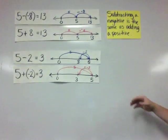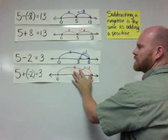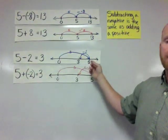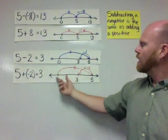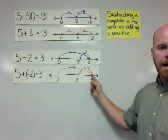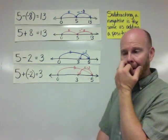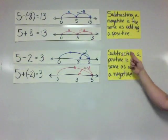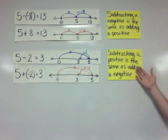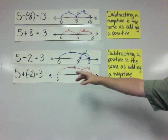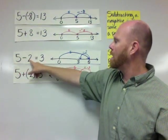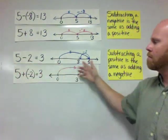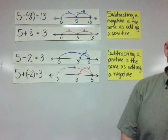Down here we can see that both of these models are essentially the same thing — here it's 5 to the right and 2 to the left, and down here it's also 5 to the right and 2 to the left. We can see that subtracting a positive is the same as adding a negative. Here we're subtracting a positive, and here we're adding a negative, and they both end up with the exact same answer.